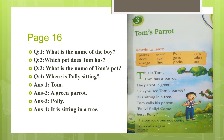Now we are going to read the lesson. Tom's Parrot. This is Tom. Tom has a parrot. The parrot is green. Can you see Tom's parrot? It is sitting in a tree. Tom calls his parrot: Polly, Polly, come here Polly. The parrot does not come. Tom calls again.